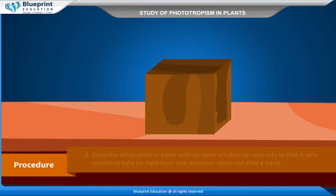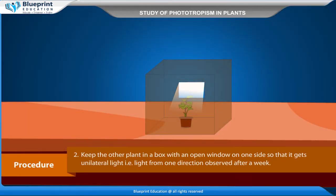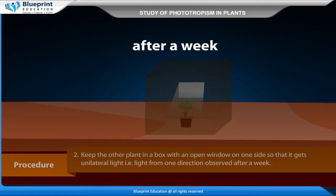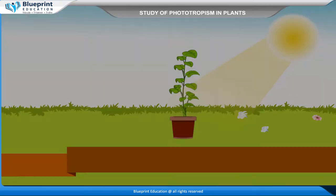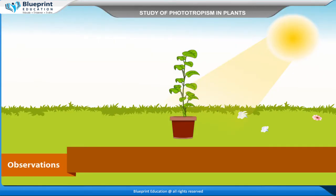Procedure: Take two potted plants. Keep one in the open so that it gets light from all directions. Keep the other plant in a box with an open window on one side, so that it gets unilateral light — that is, light from one direction. Observe after a week.